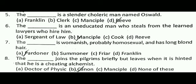Next question: The dash is a slender, choleric man named Oswald. The correct answer is D, that is the Reeve. Next question: The dash is an uneducated man who steals from the learned lawyers who hire him. The correct answer is B, that is the Manciple.